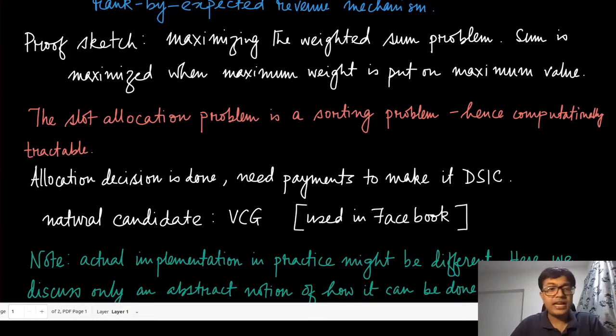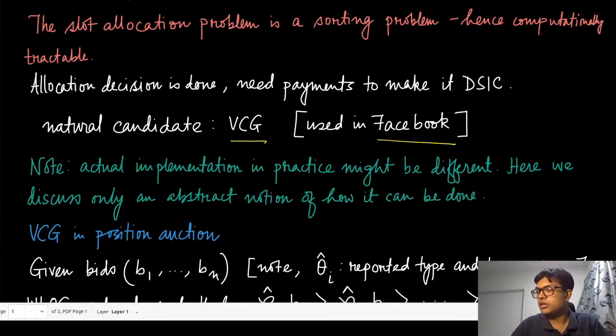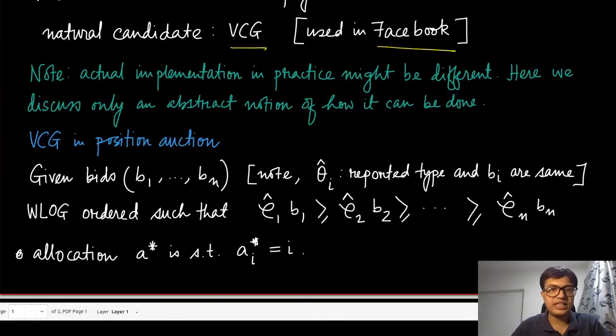Now the allocation decision is done. We need the payments to make it DSIC, and quite naturally because the allocation is efficient, the natural candidate is the VCG mechanism. This is something which is used in designing the ad auctions on Facebook. What we are going to discuss in this module is essentially a simplified version of that mechanism.